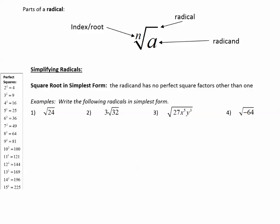Let's begin by examining the parts of a radical. This is a radical expression. This is the root symbol or the radical symbol. Underneath the radical is the radicand. The little number that sits on the radical arm is called the index or the root.